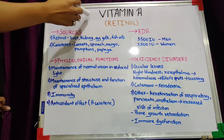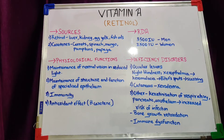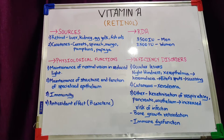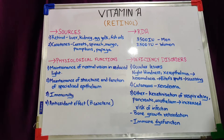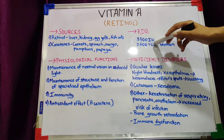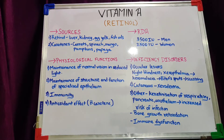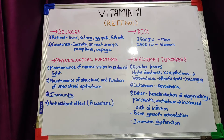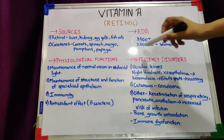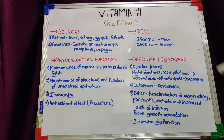Now, what is the RDA? RDA stands for Recommended Daily Allowance — the recommended amount of vitamin A we should have every day. The RDA is 3500 international units (IU) for men and 2500 international units for women. International units (IU) is a measure of the content of vitamin A or any vitamin in general.